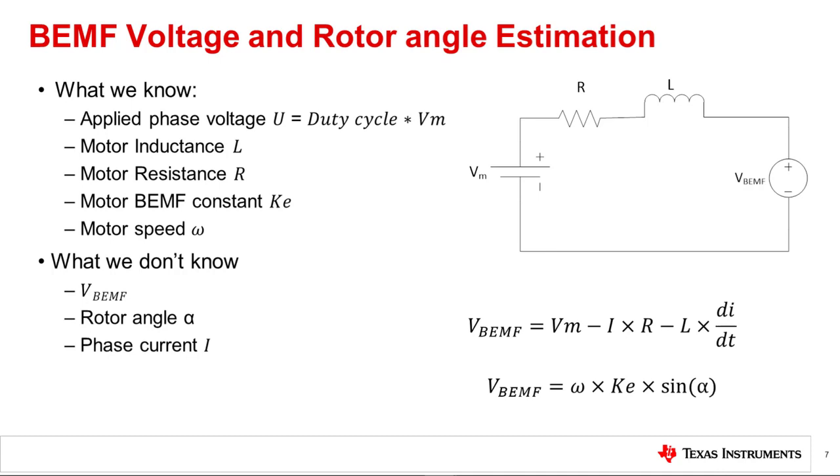In this slide, we are going to see how back EMF voltage and rotor angle alpha are estimated. When spinning a motor, we know the applied phase voltage U, which is the duty cycle times supply voltage Vm. We also know the inductance of the motor L, the resistance of the motor R, the back EMF constant Ke, and the electrical speed of the motor omega. What we do not know is the back EMF voltage, the rotor angle alpha, and the phase current I.